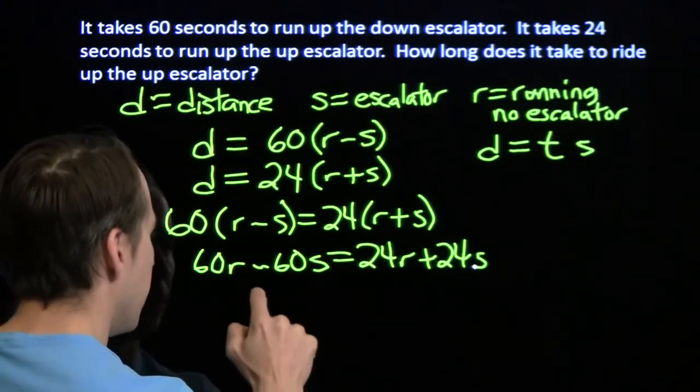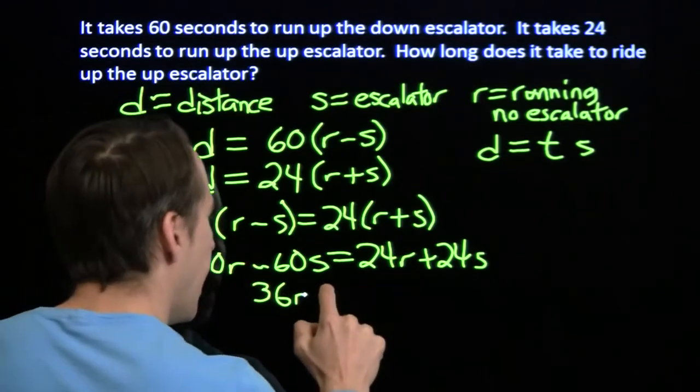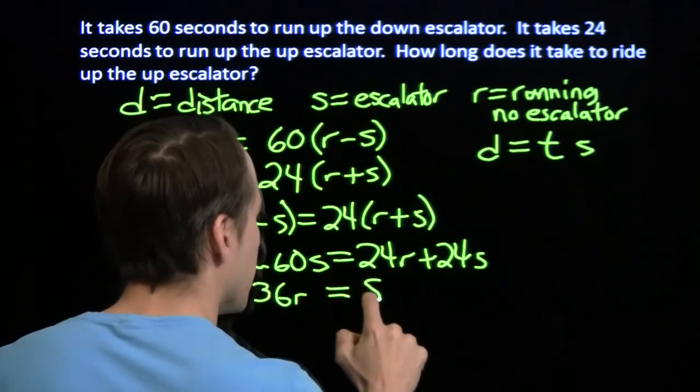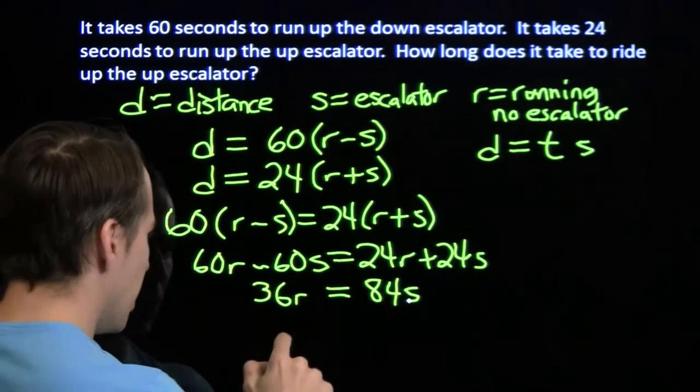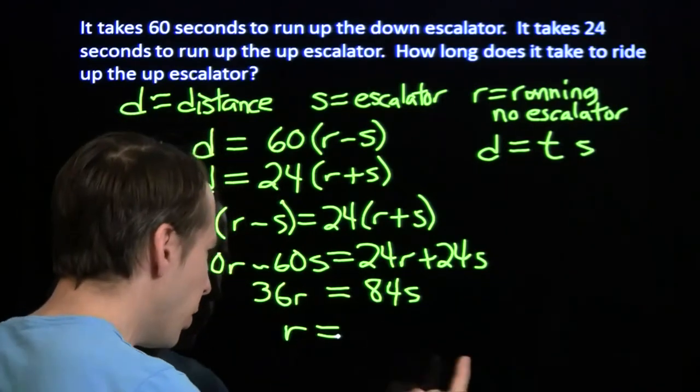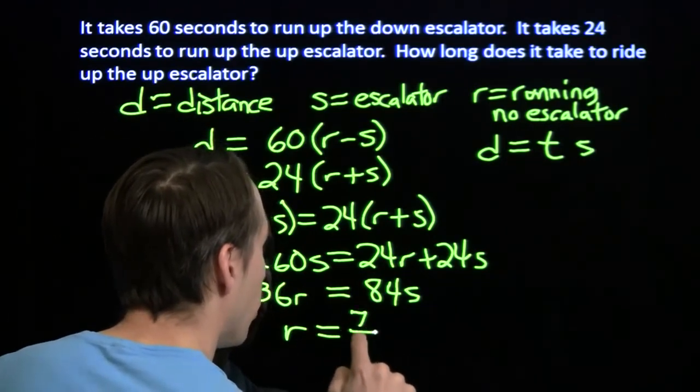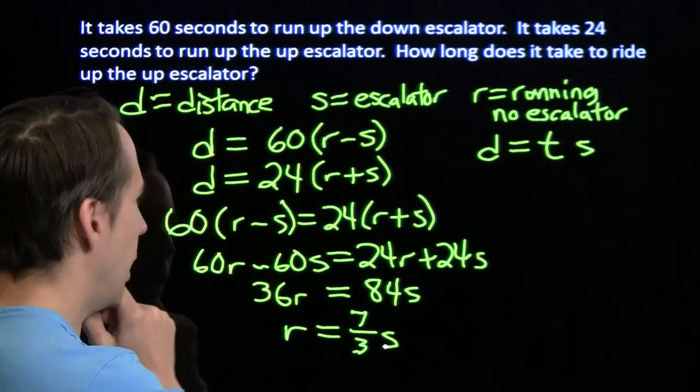Alright, well, I can subtract 24r from both sides, add 60s to both sides. I'll divide both sides by 36, take out a common factor of 12, 84 over 36, pull out a common factor of 12. We're left with r equals 7 thirds s.